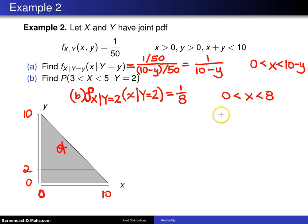You might recognize this I'll put this out here in a little cloud that X given Y equals 2 happens to be the uniform distribution between 0 and 8. So in this case the conditional is one of the well-known distributions.